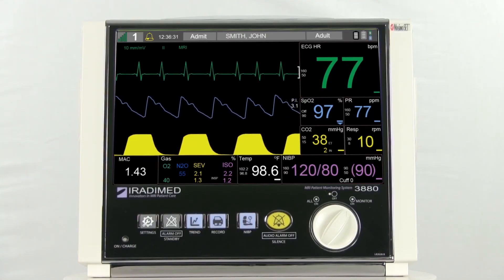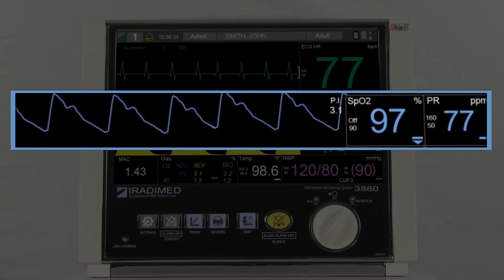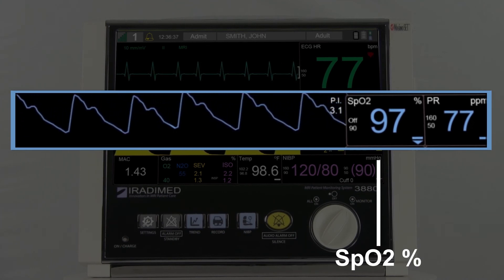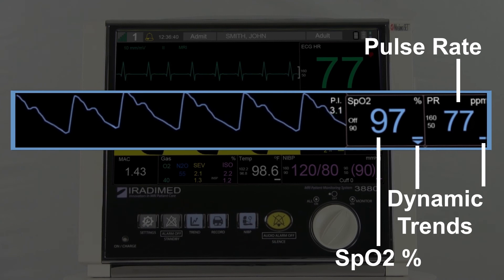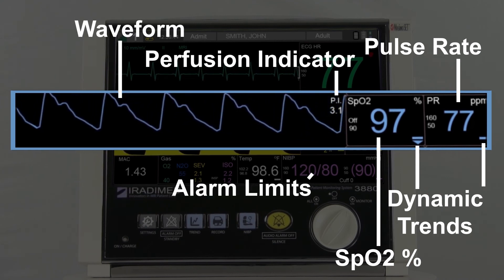The SpO2 readings will display in the blue section of the patient monitor. Here, the user will see the SpO2 percentage, pulse rate, dynamic trends, the waveform, the perfusion indicator, and alarm limits.